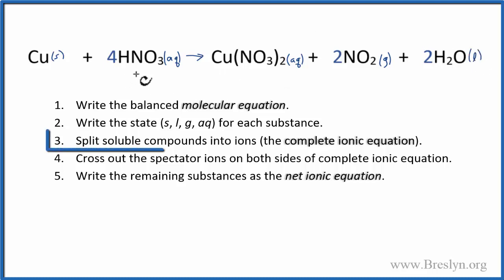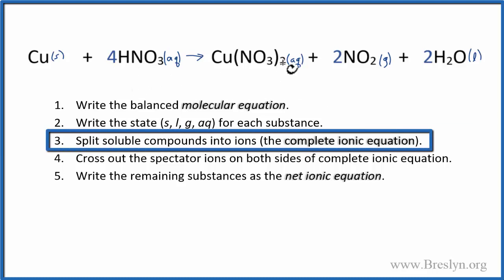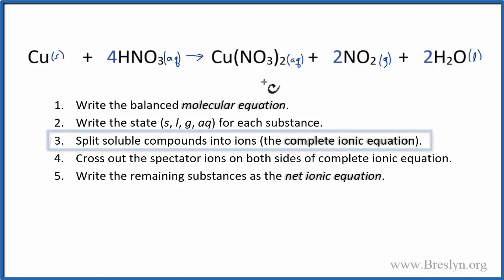Next we need to split the soluble compounds, that nitric acid and the copper nitrate, copper 2 nitrate, into the ions. So, hydrogen group 1 on the periodic table has a 1 plus charge, the nitrate ion, NO3, that has a minus charge.